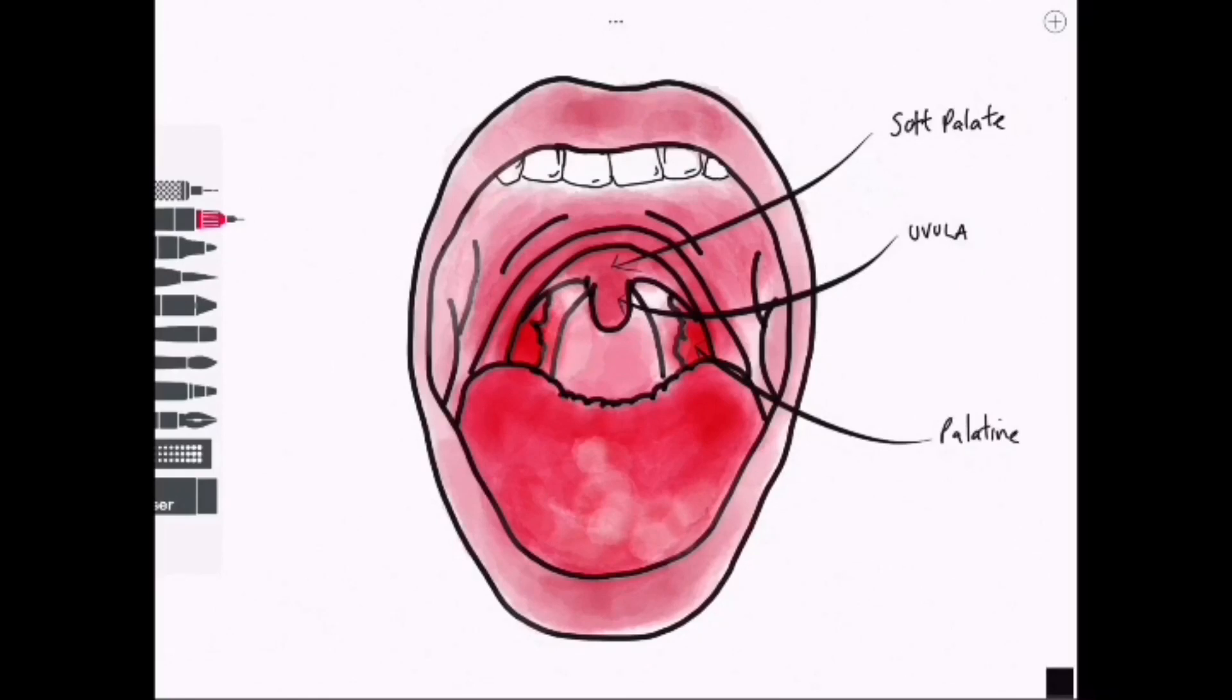Sitting between two arches are the palatine tonsils, one on each side, and these are the main structures that most people consider to be the tonsils.